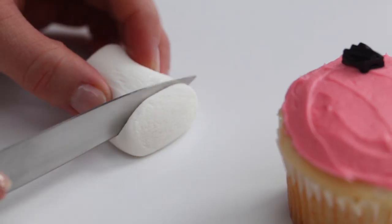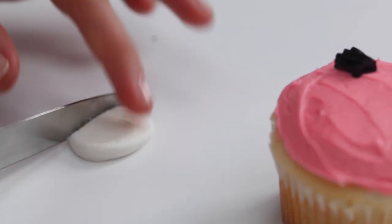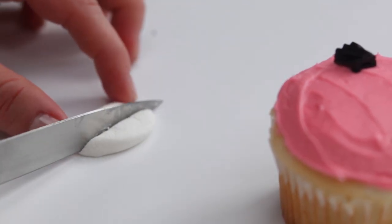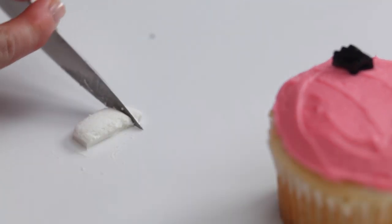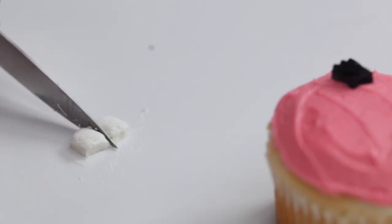Next, cut marshmallow to the same size as the licorice to finish creating the eyes. The marshmallow pieces are really sticky, so you can use white fondant instead.